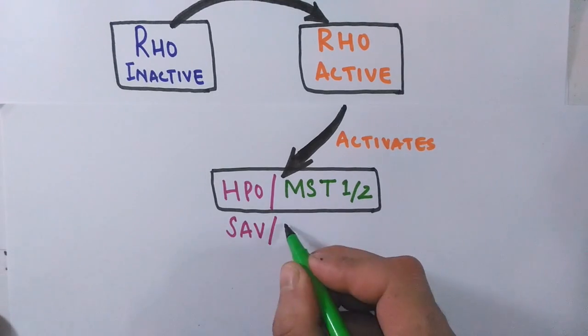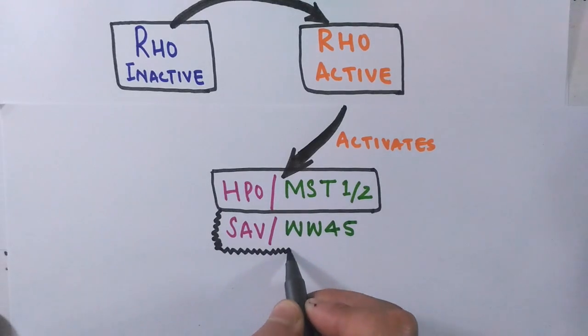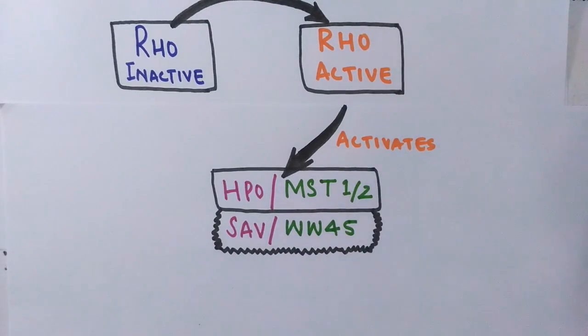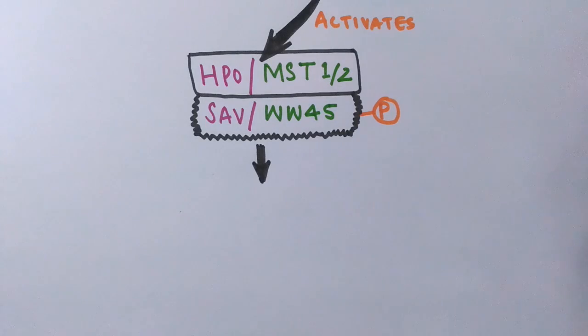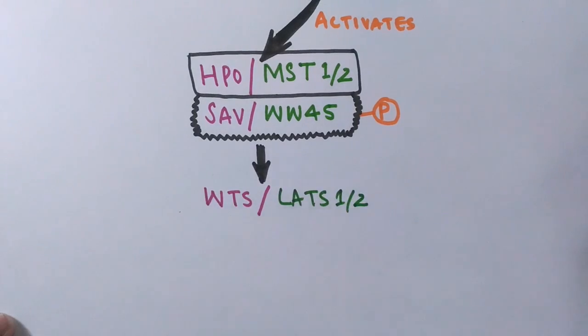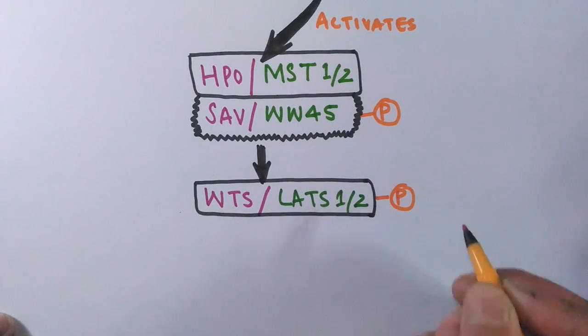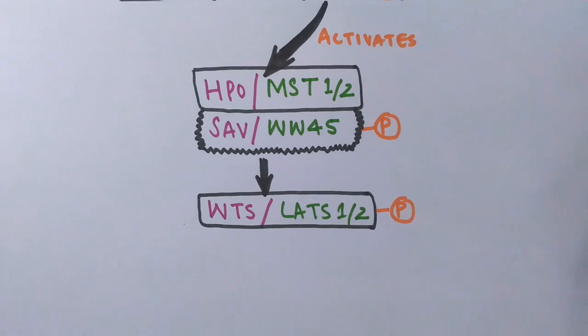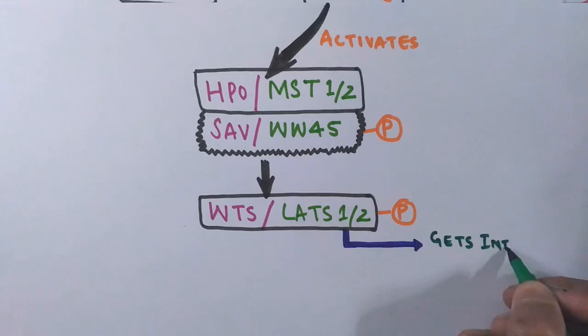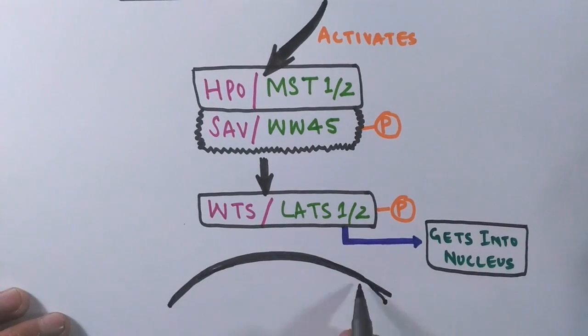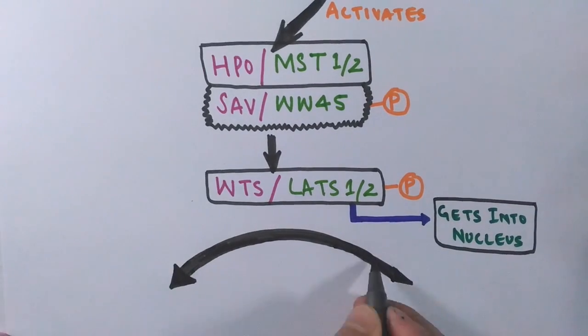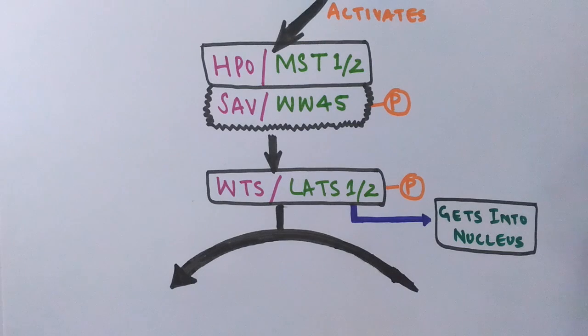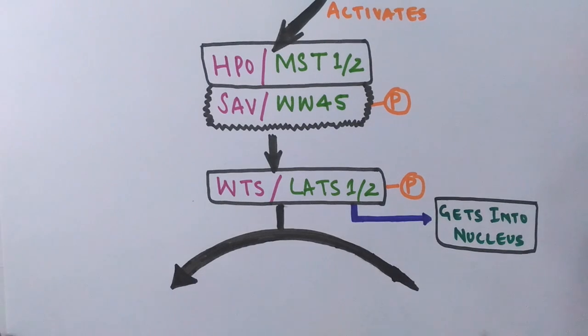Then this HPO, that's Hippo protein kinase, and MST protein kinase will bind and phosphorylate the SAV and WW45. After phosphorylating it, this complex will phosphorylate another protein kinase, that's WTS protein kinase or LATS protein kinase. Then this WTS or LATS protein kinase gets into the nucleus.